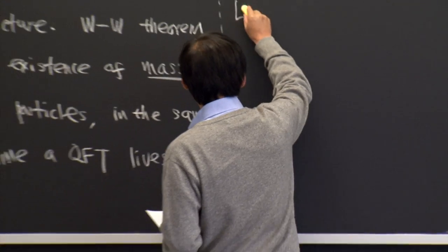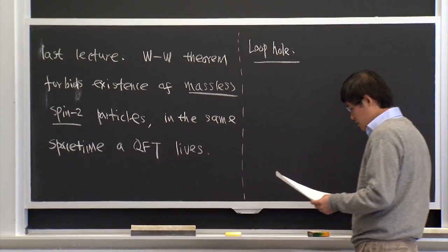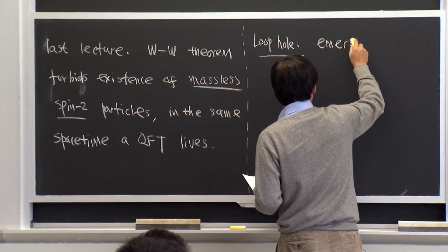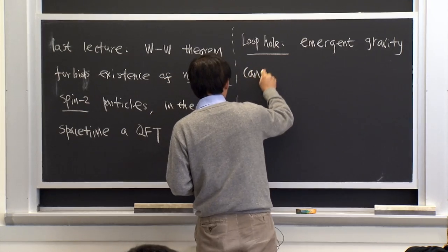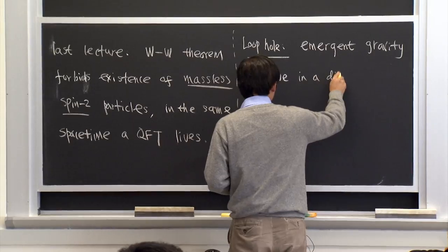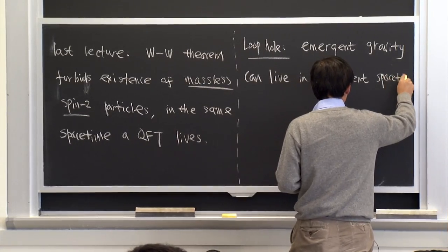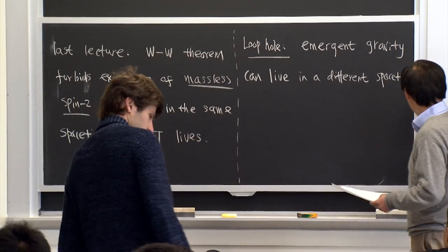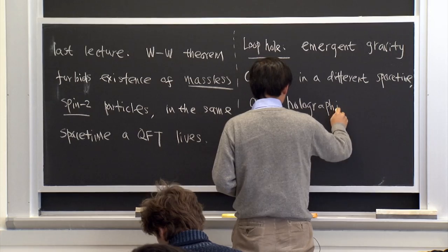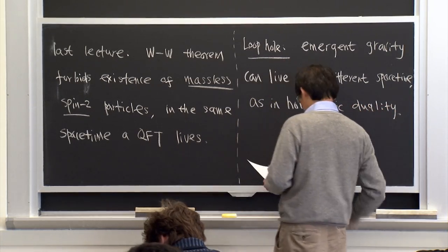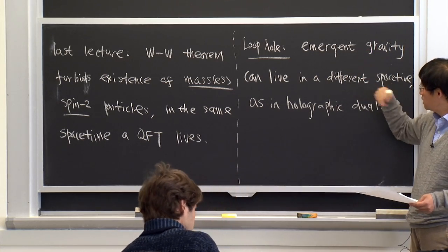As we already mentioned, a loophole of this theorem is that emergent gravity can actually live in a different spacetime. So as in holographic duality — in holographic duality, the gravity lives in one dimension higher.